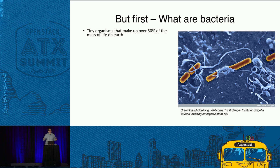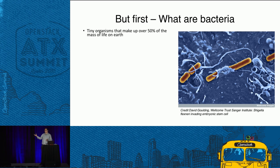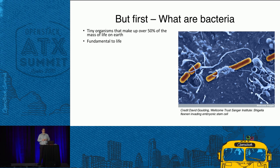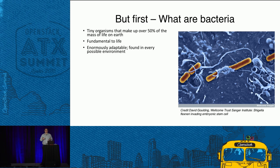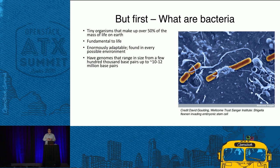What are bacteria? They're tiny microscopic organisms that make up over 50 percent of the mass of life on earth. If you were to take all life on earth and put it on an enormous scale, the bacterial mass would considerably outmass everything else combined. Bacteria are fundamental to life — you find them everywhere, in every environment. There are more bacterial cells in your body than human cells. They're enormously adaptable with very plastic genomes; they can swap genes in and out and share genes between different bacterial species, allowing them to adapt very rapidly to changing conditions.